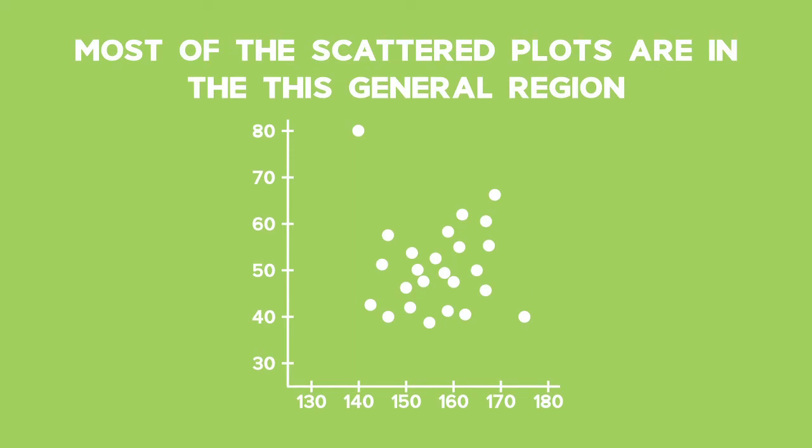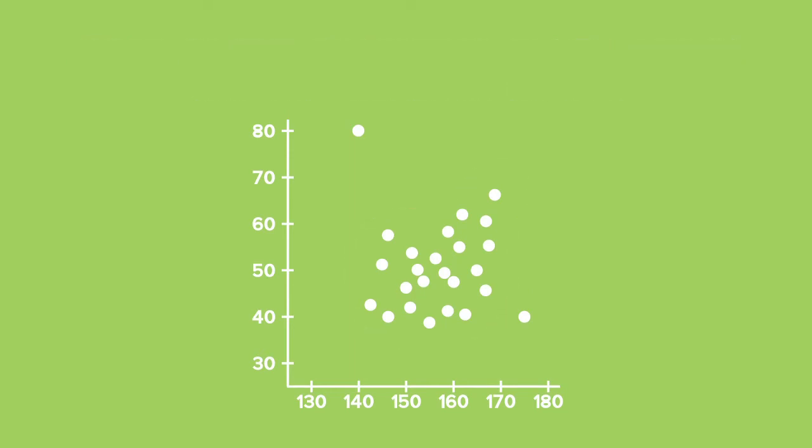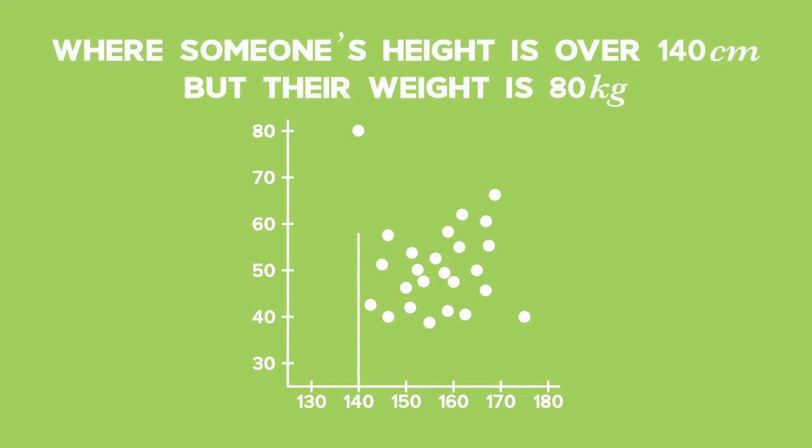Most of the scattered plots are in this general region, but then we got this over here, where someone's height is over 140 cm, but their weight is 80 kg.